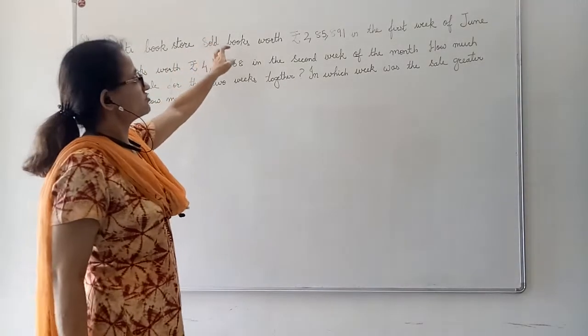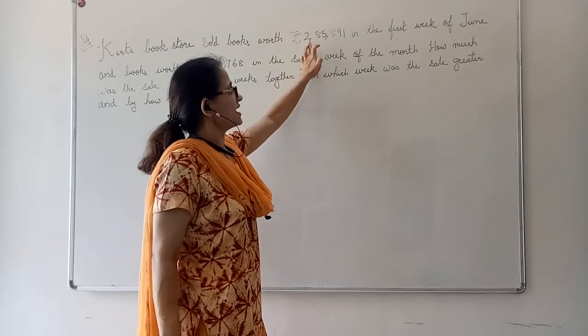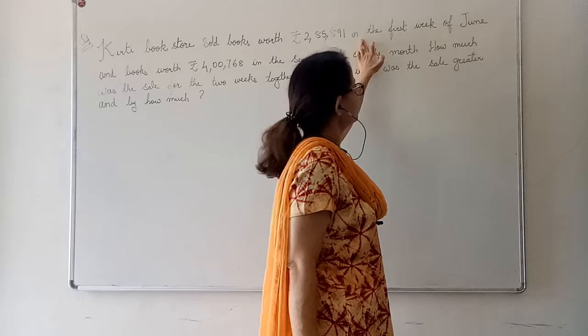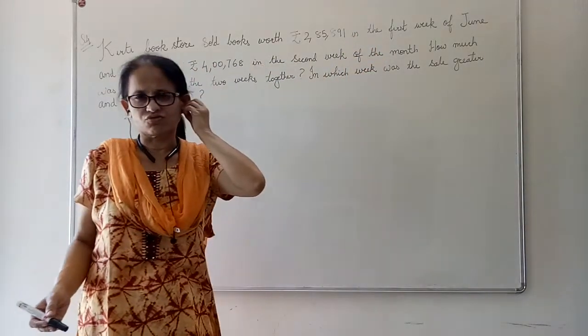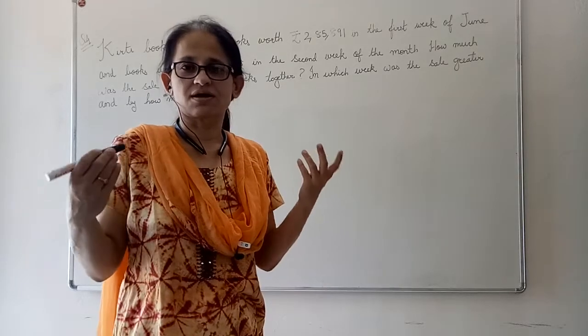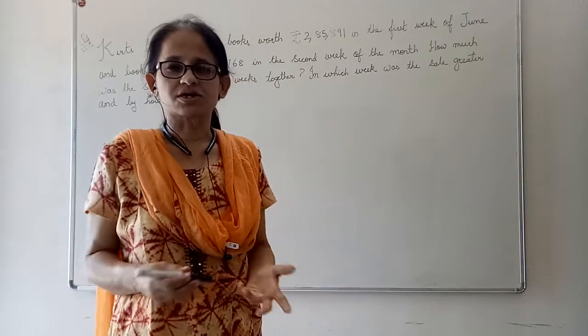Kirti bookstore sold books worth rupees 2,85,891 in the first week of June. There is a bookstore. Now in Rajkot we have Royal Stationers, we have Nachiketa, we have Ekta Prakash, different different.